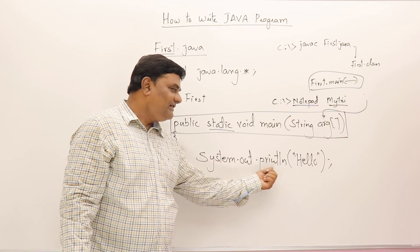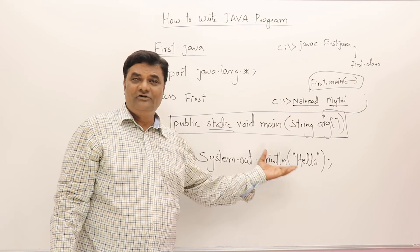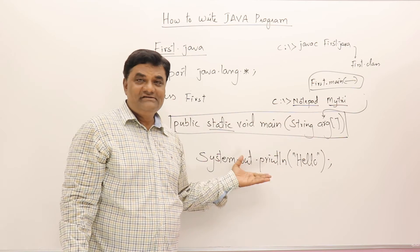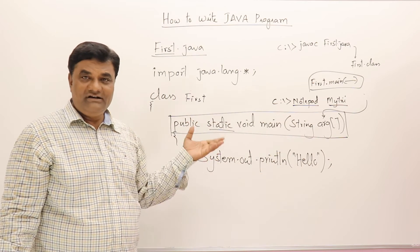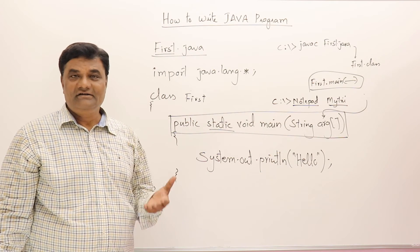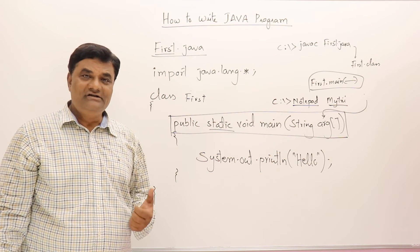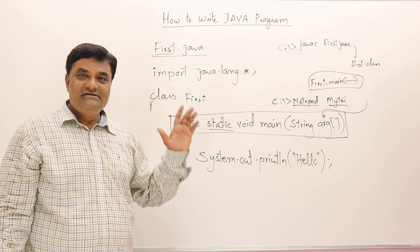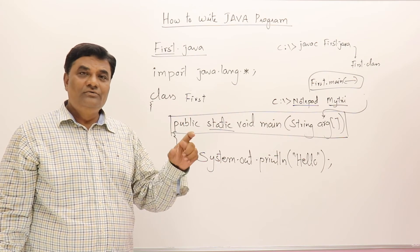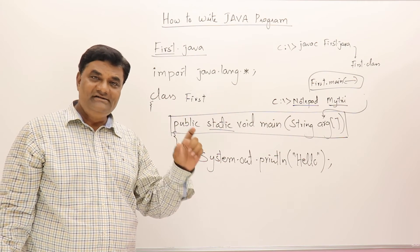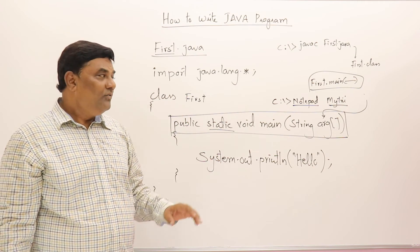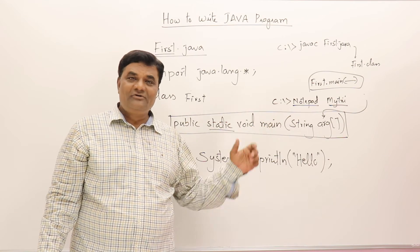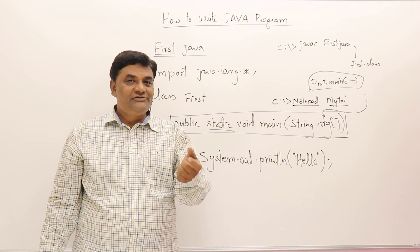System.out.println is used for printing - this is a standard thing. What System and out mean we will learn in coming videos. I just wanted to give you the exact meaning of why we write public static void main. That is all about the first program.